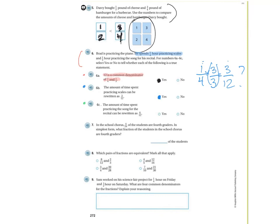For 6c: the amount of time spent practicing the song can be rewritten as 6/12. He spent a third of an hour. Now, 6/12 is equal to 1/2 because 6 is half of 12. So they're really asking: is 1/2 equal to 1/3? No — one-half is not the same as one-third. Which means 6/12 is not the same as 1/3, so the answer is no.